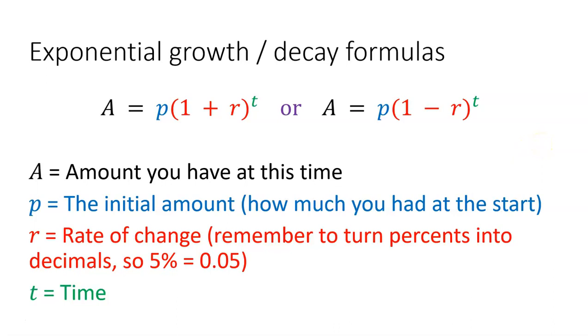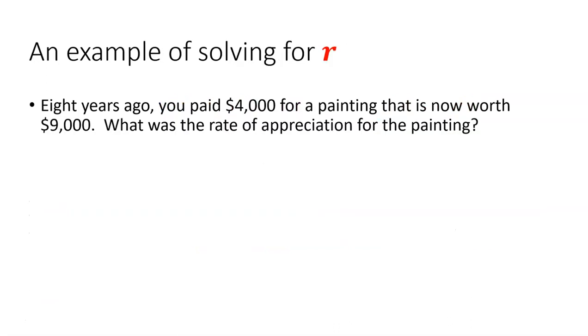We've already in part one looked at how we could solve for A, the amount we have at a current time, or at a certain time, or a certain value that we have at a given time. But we can solve for any of these three other variables, and today we're going to look at solving for t, time, and r, the rate. So first, let's check out solving for r, the rate.